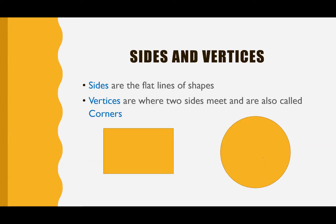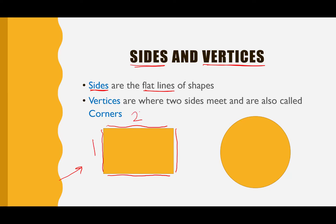Before we learn about our shapes, we're going to talk about how many sides a shape has and how many vertices it has. Sides are the flat lines of a shape. So if you look at this shape right here, we see all these flat lines — I'm drawing red next to all the flat lines. Let's count how many flat lines: one, two, three, four. So this shape has four sides.